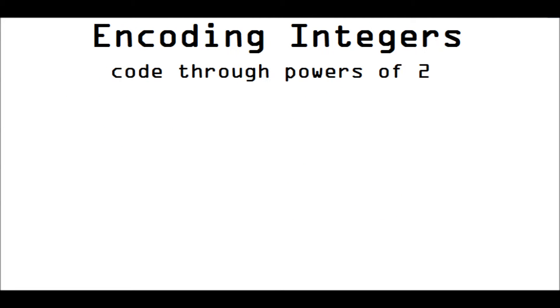Now, those are about encoding characters. How do we encode integers into binary? Well, it turns out that we code through powers of two. And I definitely need an example on this. So, here we go. Here is a binary number.